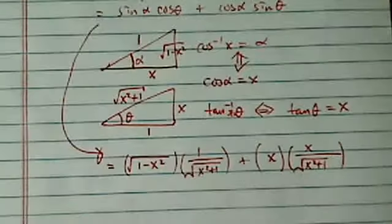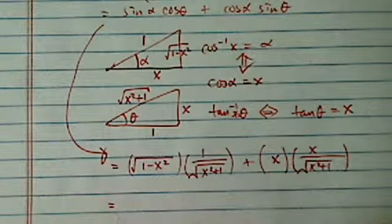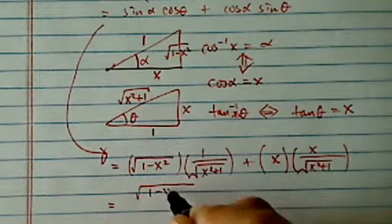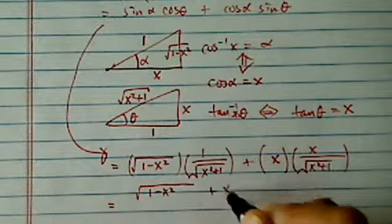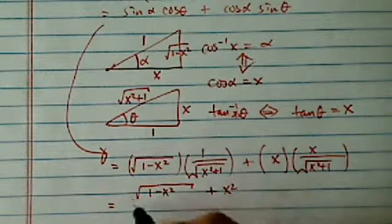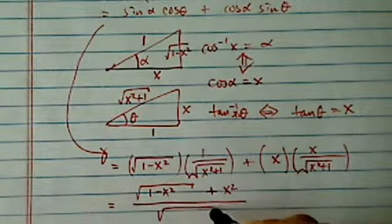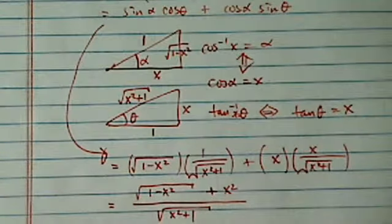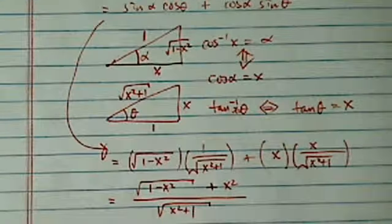Let's clean up a little bit, so we have radical 1 minus x squared plus x squared on top, divided by radical of x squared plus 1. So that's the solution.